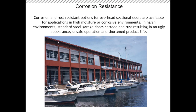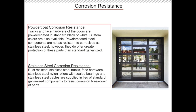Corrosion and rust resistant options for overhead sectional doors are available for applications in high moisture or corrosive environments. In harsh environments, standard steel garage doors corrode and rust, resulting in an ugly appearance, unsafe operation, and shortened product life. Tracks and face hardware can be powder coated in standard black or white — custom colors are also available. Powder coated steel components are not as resistant to corrosives as stainless steel, but offer greater protection than standard galvanized.